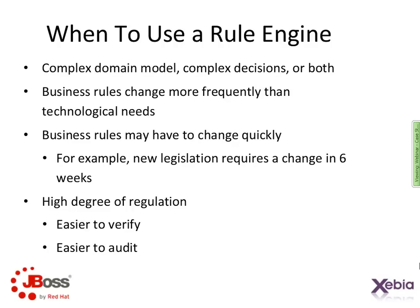There are certainly situations where having a business rules engine introduces overhead that outweighs the value. A rule engine generally provides the most value when you have a complex domain model, complex decisions to make, or both. Abstracting business rules is especially beneficial in highly regulated industries. When changes to your business processes are sometimes out of your hands, being able to respond rapidly to new legislation is extremely valuable. Having business rules described declaratively also makes their execution easier to verify and audit, increasing business confidence in highly visible automated situations.